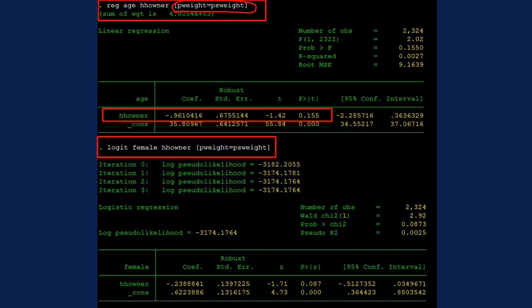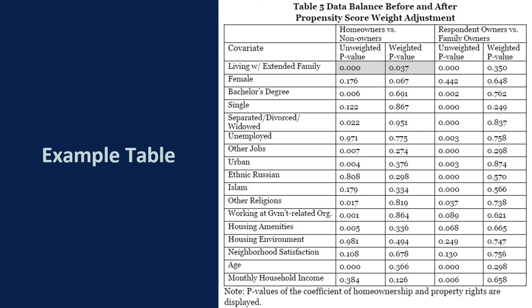And as you can see, now there is no significant difference in age between owners and non-owners after applying this propensity score weight.